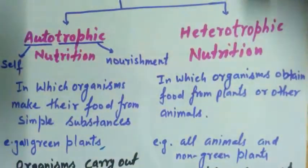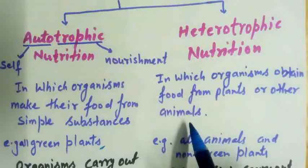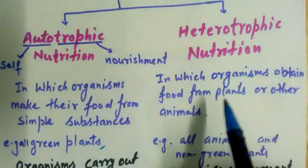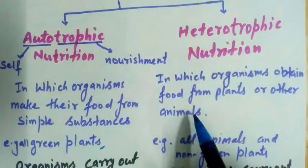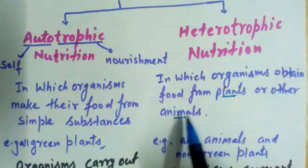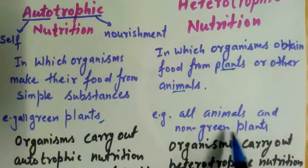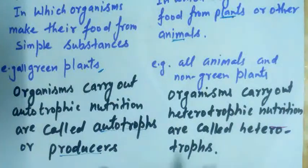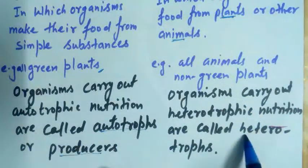Next is heterotrophic nutrition, in which organisms obtain food from plants or other animals. Such type of nutrition is called heterotrophic nutrition — the organism does not make its own food but gains it from others, either from plants, animals, or both. Examples include all animals and non-green plants, including human beings. Organisms that carry out heterotrophic nutrition are called heterotrophs.